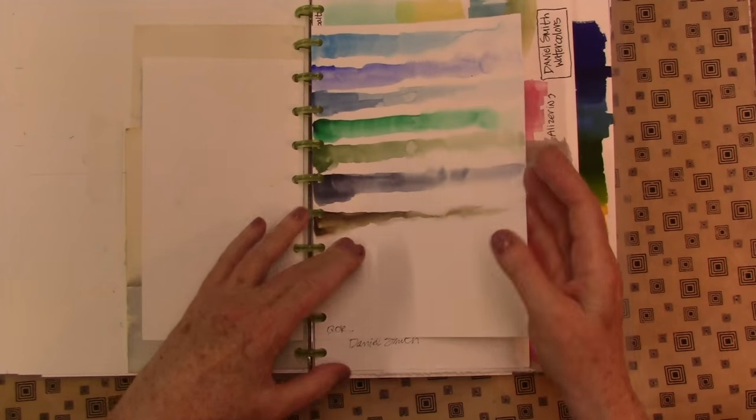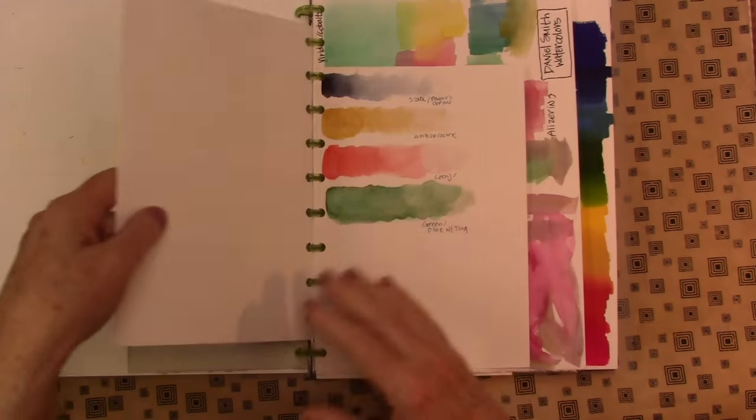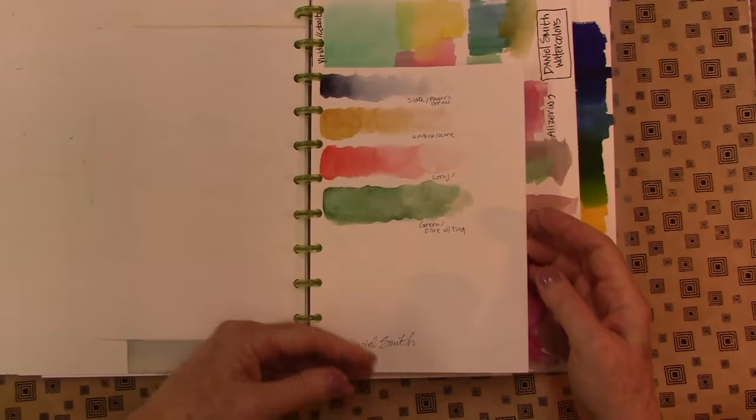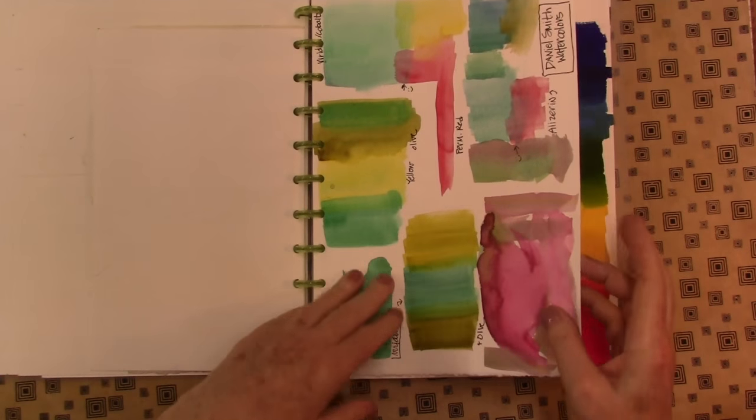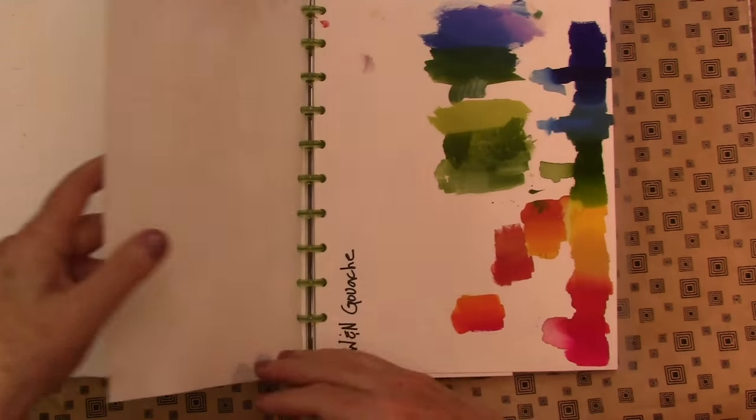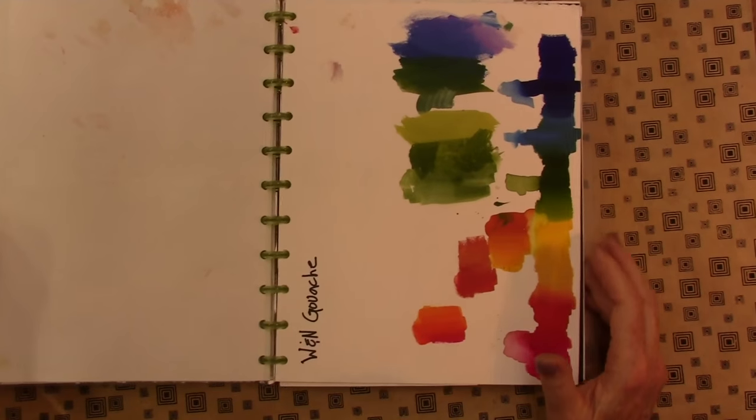I think of wabi-sabi as the grays and the again more of a dead palette or an earth palette. Here's just a sampling of some core colors. Here's a palette I mixed, I'm just going to go through this, you don't need to know everything.